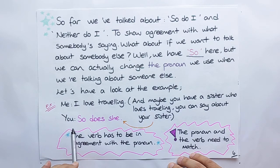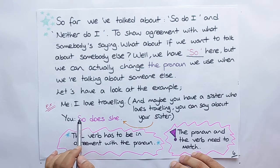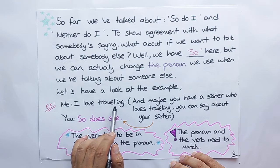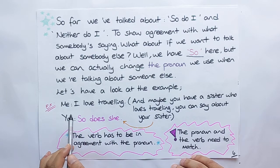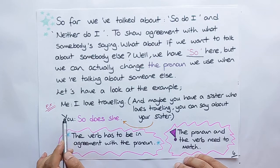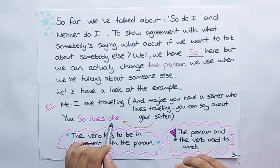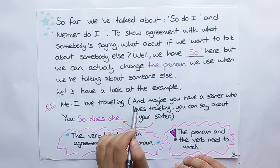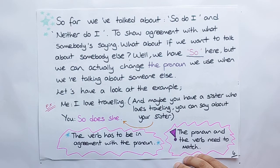Me and you. There's a conversation here. I say that I love traveling. Okay. And also, you say, so does she. Here, the explanation is, and maybe you have a sister who loves traveling, you can say about your sister. The verb has to be in agreement with the pronoun. The pronoun and the verb need to be matched. Be careful about here, everybody.